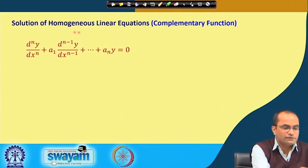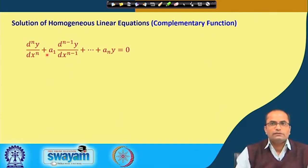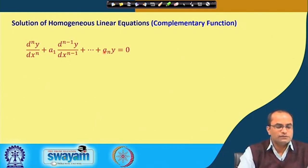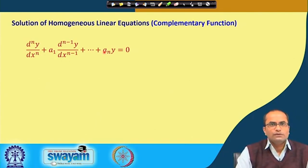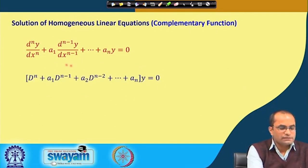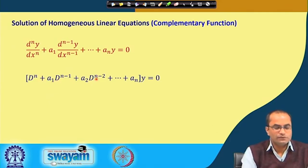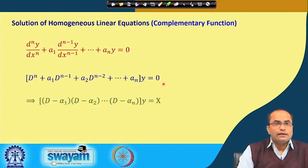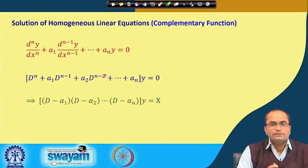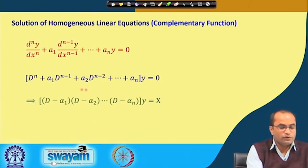Here we will consider the nth order linear homogeneous differential equation with constant coefficients. The coefficients a₁, a₂, a₃, ..., aₙ are taken as constant. As discussed in the last lecture, we can write this equation in operator form: D^n + a₁D^(n-1) + ... = 0, and we can work with the operator D using the same algebraic operations we do with polynomials.